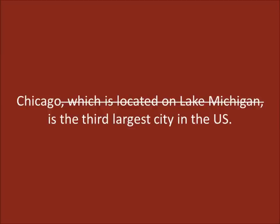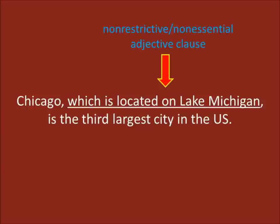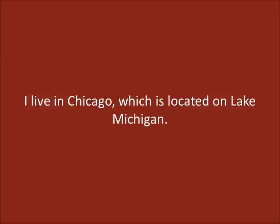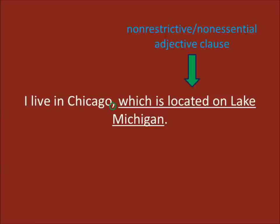This idea of extra information is very important. If we don't need the adjective clause in order for the sentence to make sense and give us useful information, then we call it a non-restrictive or non-essential adjective clause. This is because we don't need the clause, and it does not specify or identify what we are talking about. We don't ask, which Chicago? We already know what or who we are talking about. For example: I live in Chicago, which is located on Lake Michigan. Here our adjective clause is extra information, which means it is non-restrictive or non-essential, which means we must use commas. But if a non-restrictive adjective clause comes at the end of a sentence, there will only be a comma at the beginning of the adjective clause, since there is already a period at the end.